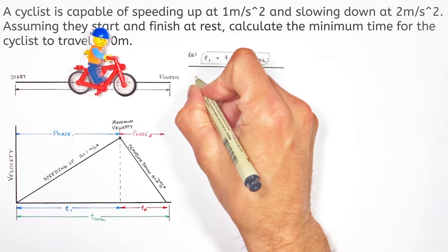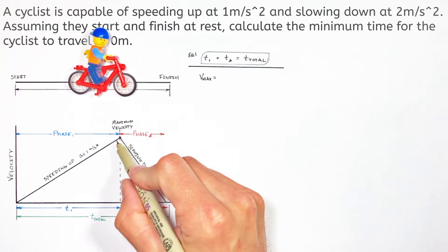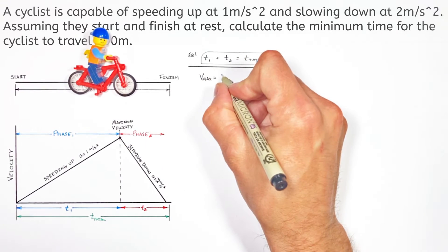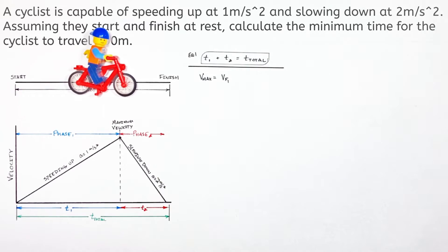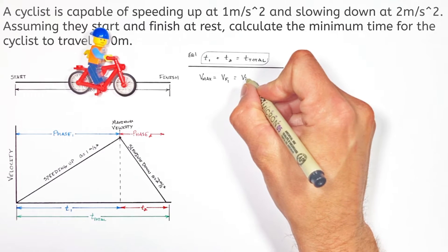You see the maximum velocity is equal to the final velocity of the first phase of motion. So we'll call that VF1. But it's also equal to the initial velocity in the second phase of motion. We'll call that VI2.